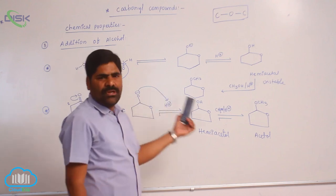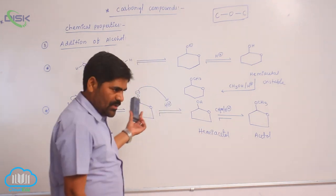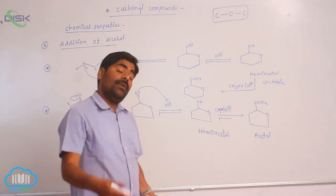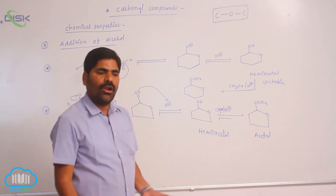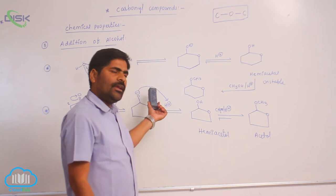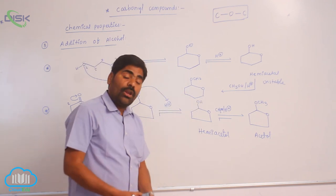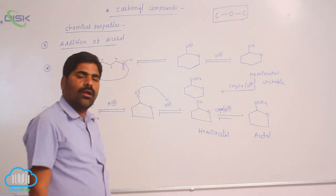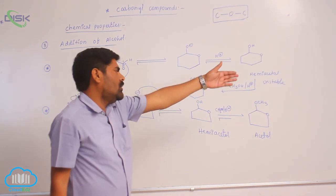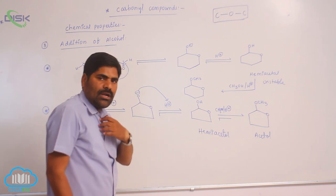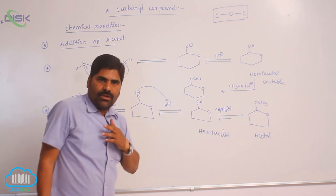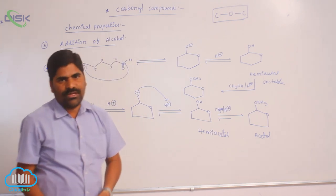So, these are the formation of which one, acetal and hemiacetal, if same molecule contain both OH group as well as what, alcohol is OH group, aldehyde carbonyl group. Same molecule contain carbonyl group and alcohol group. So, acetal as well as what, hemiacetal formation takes place. These are the two important examples for formation of what, acetal and hemiacetal.